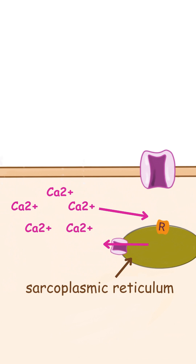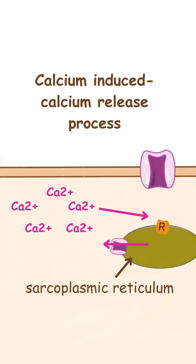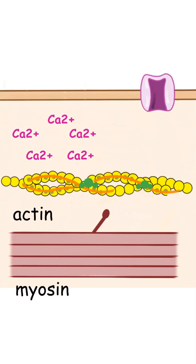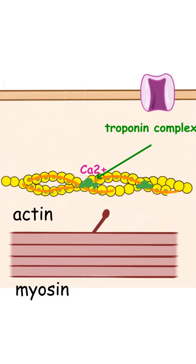This process is known as calcium-induced calcium release. When the calcium levels within the cell increase, they bind to the troponin complex, enabling tropomyosin to detach from the myosin-binding sites on actin.